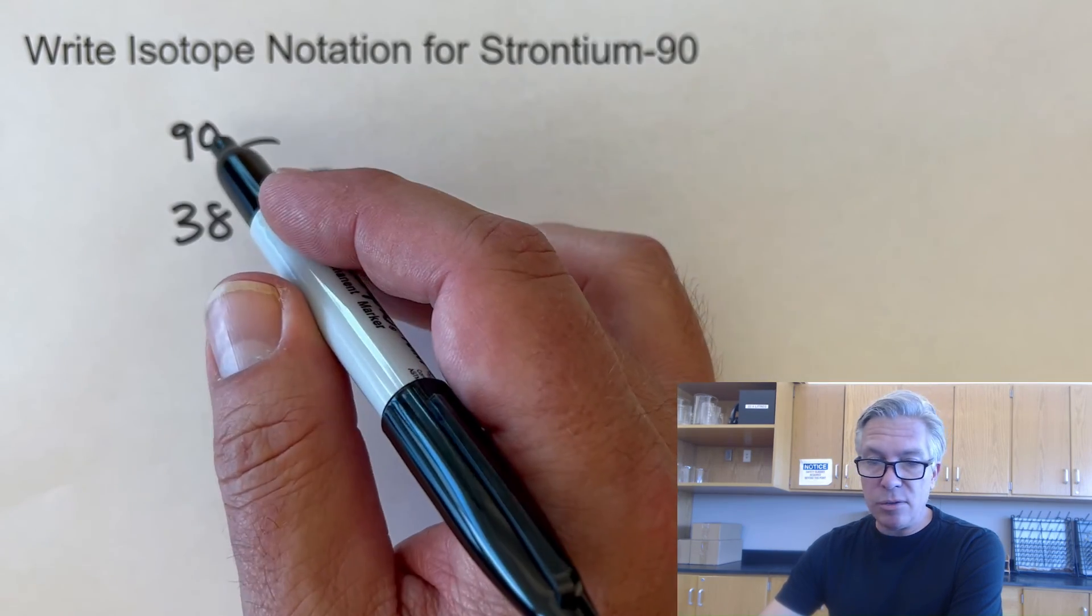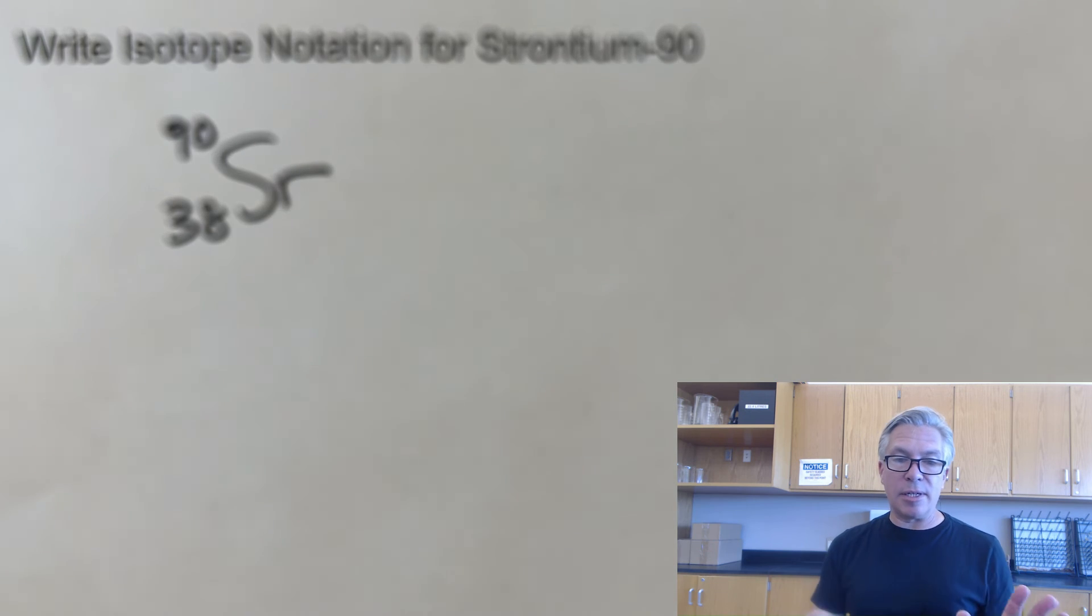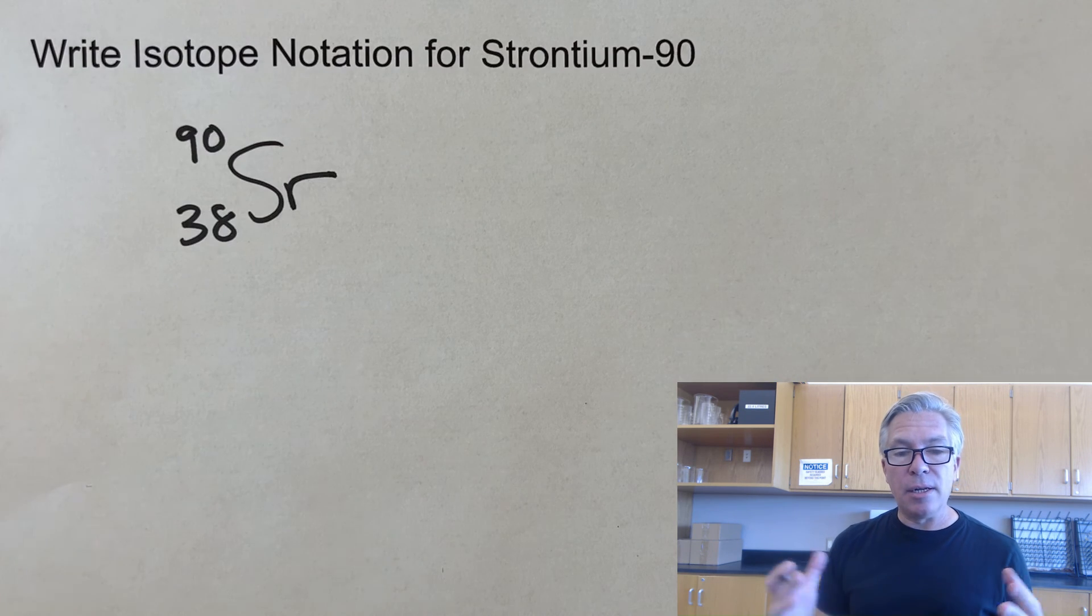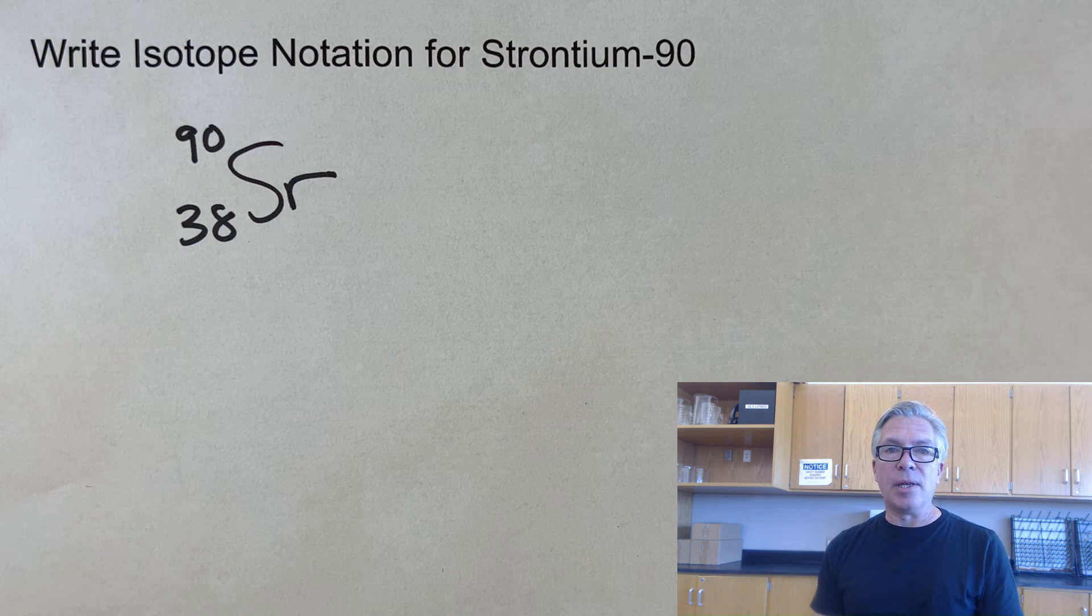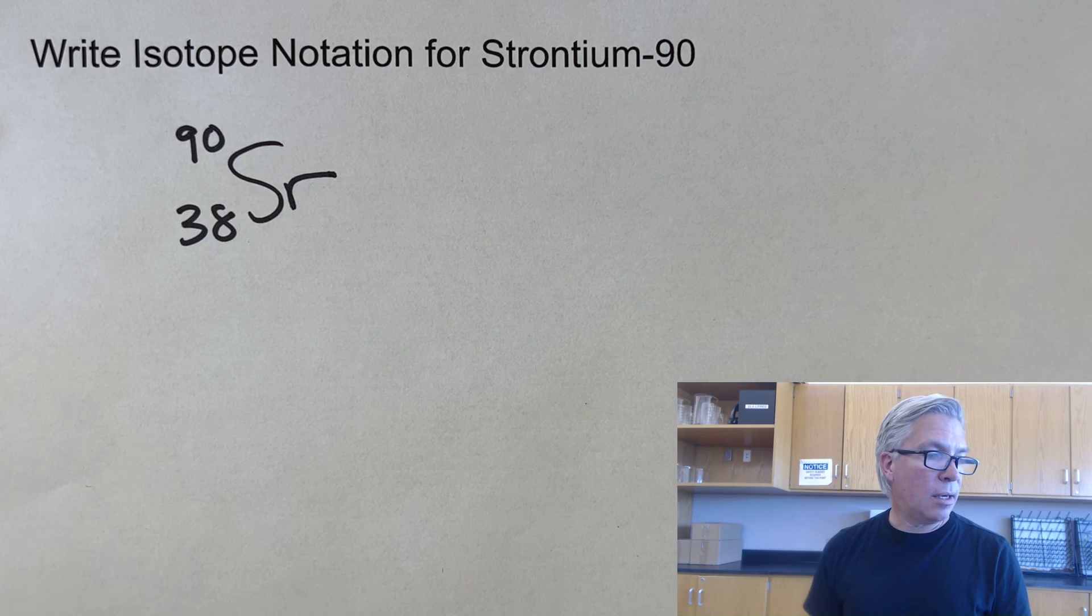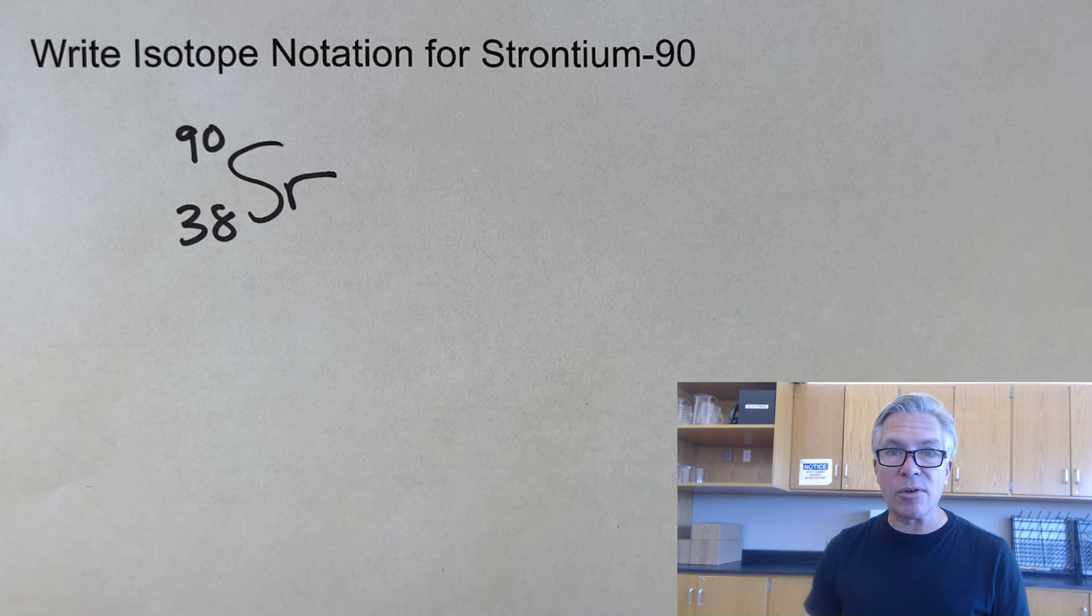So 38 protons, 52 neutrons for a total of 90. We haven't done anything with electrons yet. That'll be coming in a later video, but there you have it. A couple of isotope notations to get us off to a good start. If you have any questions or suggestions of isotopes, you can send me those. In the meantime, happy solving and have a great day.